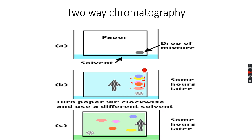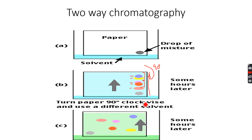What we do is, after carrying out chromatography once, we rotate the chromatography paper 90 degrees. This side, which I have drawn, now becomes the base that is dipped in the solvent. As you can see, we have rotated the chromatography paper.